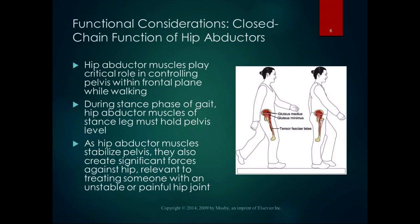Hip abductors play a really critical role in controlling frontal plane pelvis movements in closed chain when you're walking. During the stance phase of gait — a closed chain on the stance foot — the hip abductor muscles of the stance leg have to hold the pelvis level. If those muscles aren't holding the pelvis level, the contralateral side of the pelvis is going to drop. As the hip abductors stabilize the pelvis, they also create significant forces against the hip joint, which we need to address in cases of an unstable or painful hip.